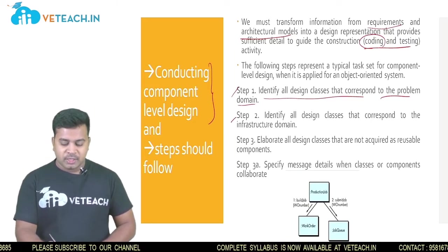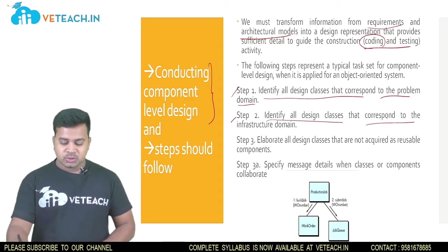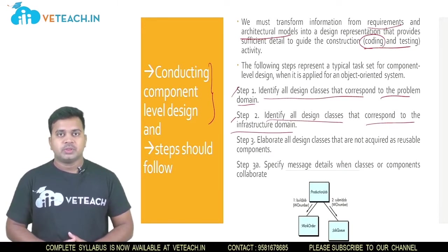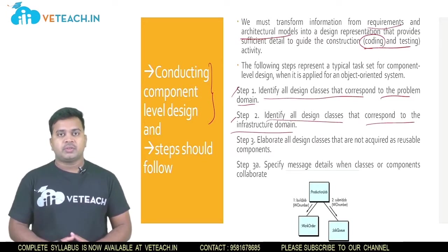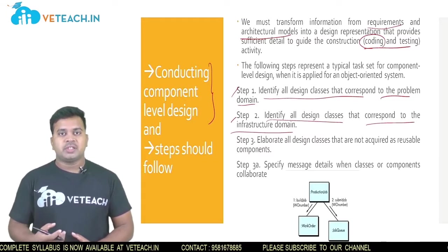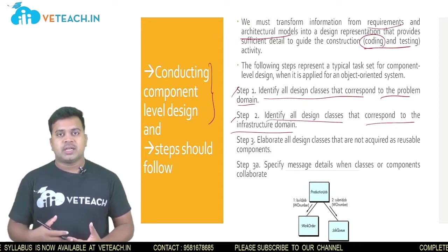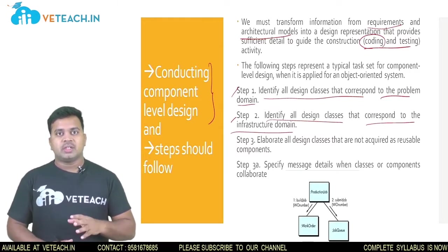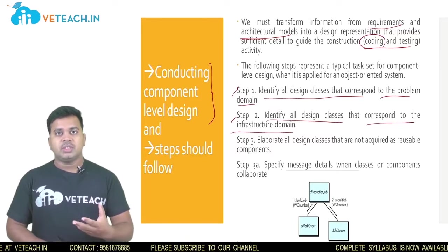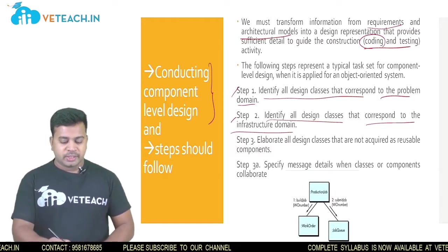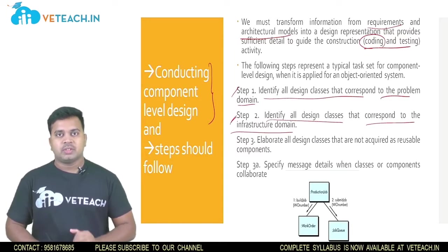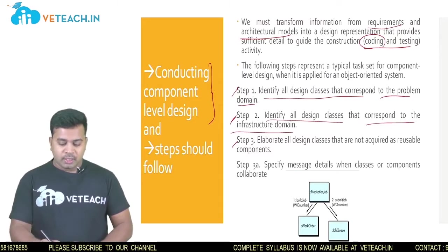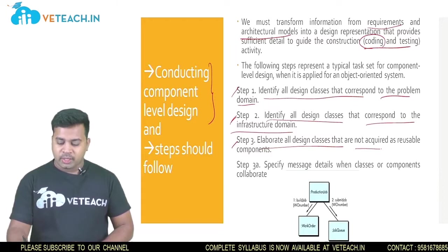The second step is to identify all design classes that correspond to the infrastructure domain. This is external to the software project. When designing any software project, we have internal things like software developers and staff, but we also need infrastructure for development. So in the second step you need to find out the infrastructure required.